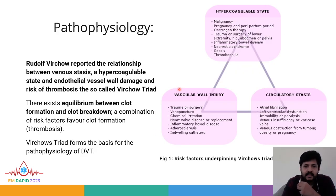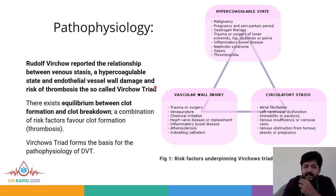Let's discuss the pathophysiology of deep vein thrombosis. Rudolph Virchow reported the relationship between venous stasis, a hypercoagulable state, and endothelial vessel wall damage and the risk of thrombosis — which we call Virchow's Triad. The three components are: hypercoagulable state, vascular wall injury, and circulatory stasis.